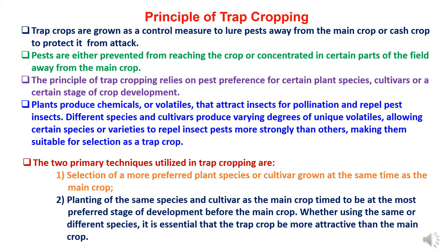Principle of Trap Cropping: Trap crops are grown as a control measure to lure pests away from the main crop or cash crop to protect it from attack. Pests are either prevented from reaching the crop or concentrated in certain parts of the field away from the main crop. The principle of trap cropping relies on pest preference for certain plant species, cultivars, or a certain stage of crop development.